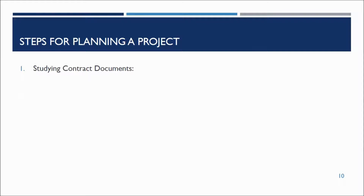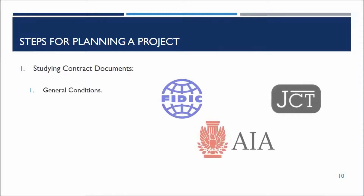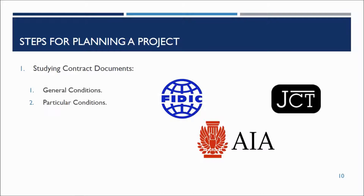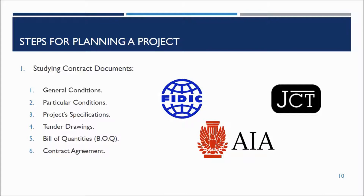In order to start planning a project, there are some steps to follow. First, study contract documents that consist of general conditions. There are many standard forms of contracts such as FIDIC, JCT, or AIA. These documents also include particular conditions, project specifications, tender drawings, bill of quantities, contract agreement, and addendums and amendments — all of which are contract documents.